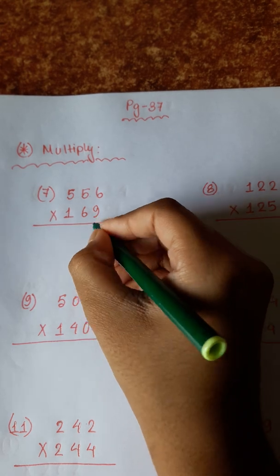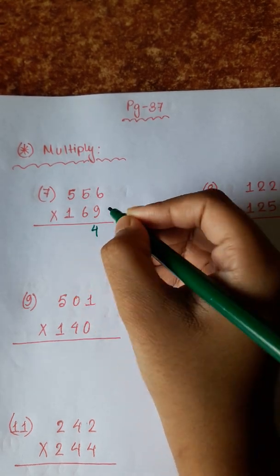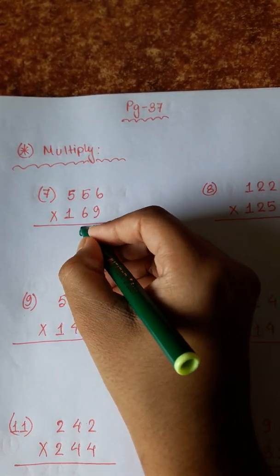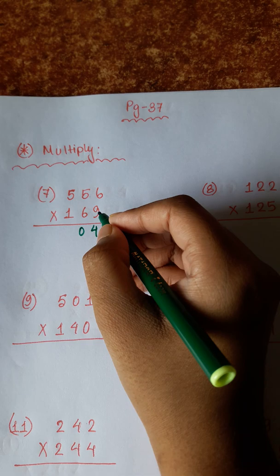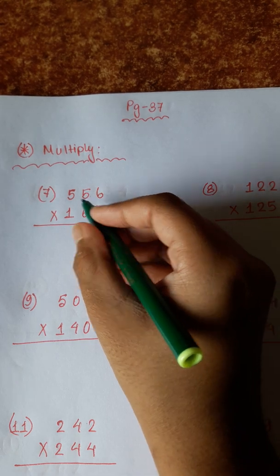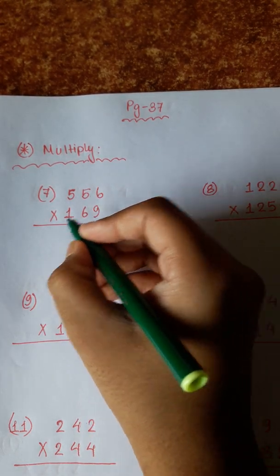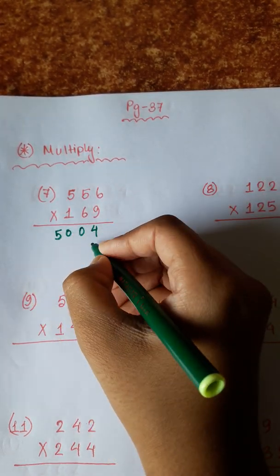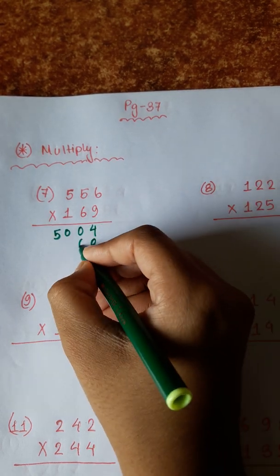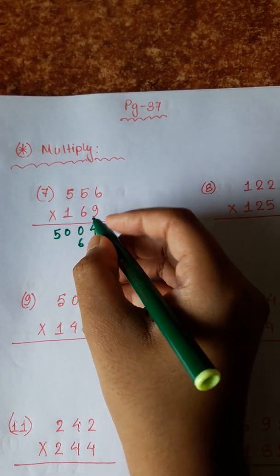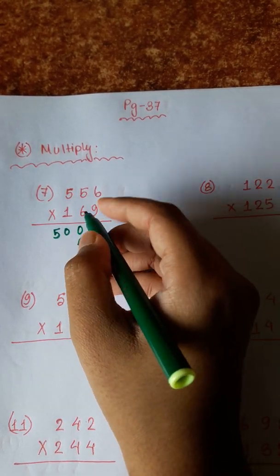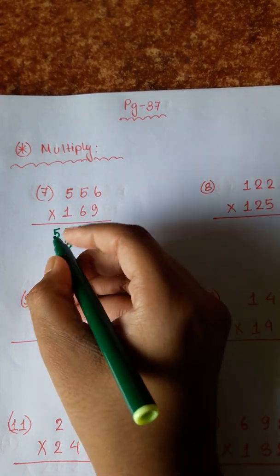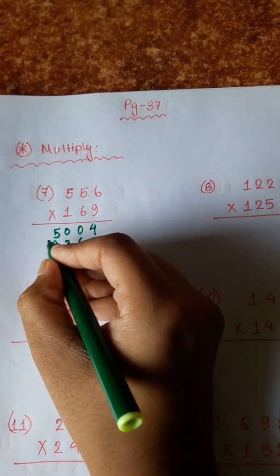9, 6 sir — 54. 5. 9, 7 — 45 plus 5, 50. 5. 9, 7 — 45 plus 5, 50. 6, 6 sir — 36. 3, 5, 6 sir — 30 plus 3, 33. 5, 6 sir — 30 plus 3, 33.